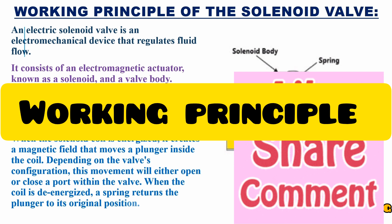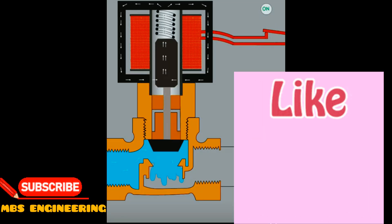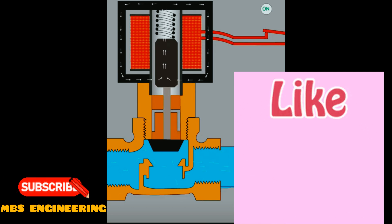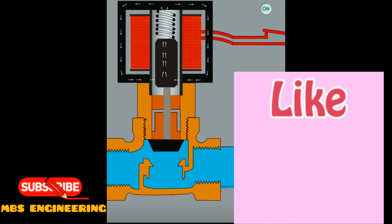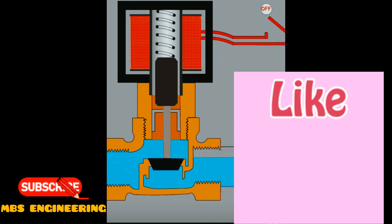Next, we will see the working principle animated video for better understanding. When the solenoid coil is energized, it creates a magnetic field that moves a plunger inside the coil. Depending on the valve's configuration, this movement will either open or close a port within the valve. When the coil is de-energized, a spring returns the plunger to its original position.